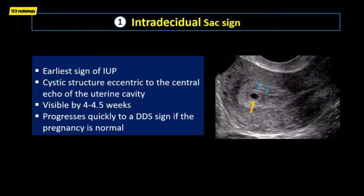The intradecidual sac sign represents the early gestational sac. It is visible by 4 to 4.5 weeks of gestation on transvaginal ultrasound. As you can see on this transvaginal image, the yellow arrow is pointing to the intradecidual sac sign, which is seen eccentric to the central echo.